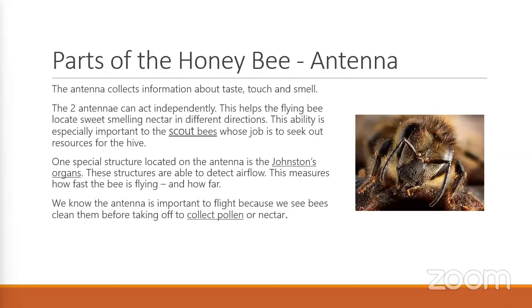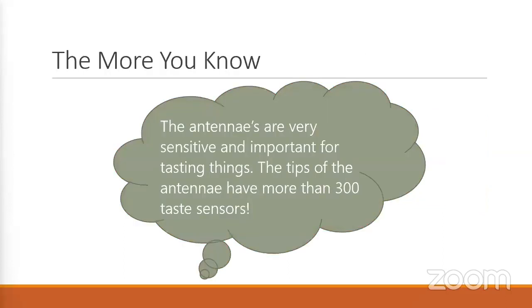This is especially important to the scout bees, whose main job is to find food for the hive. There's also another special structure located with the antenna called the Johnston's organ. This structure is able to detect airflow — it measures how fast they are flying and how far. Going back to that, they know how far to go and how far to come back. If you've ever watched a live honeybee, you will see them clean their antennae with their legs before they take off, which shows how important these antennae are to their flight path. There are over 300 taste sensors in those antennae.